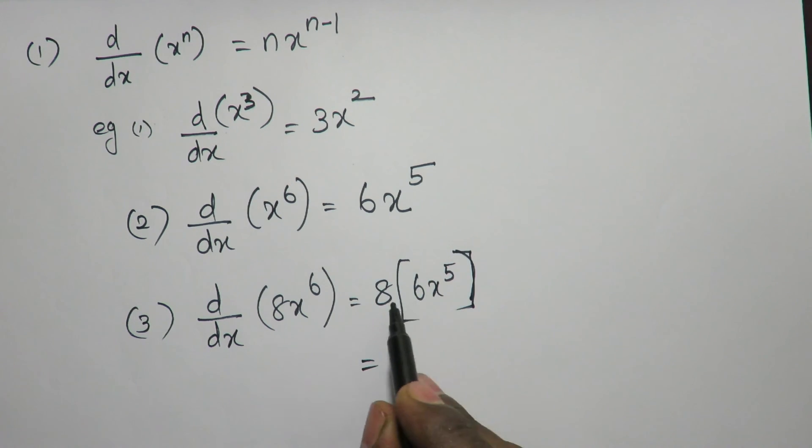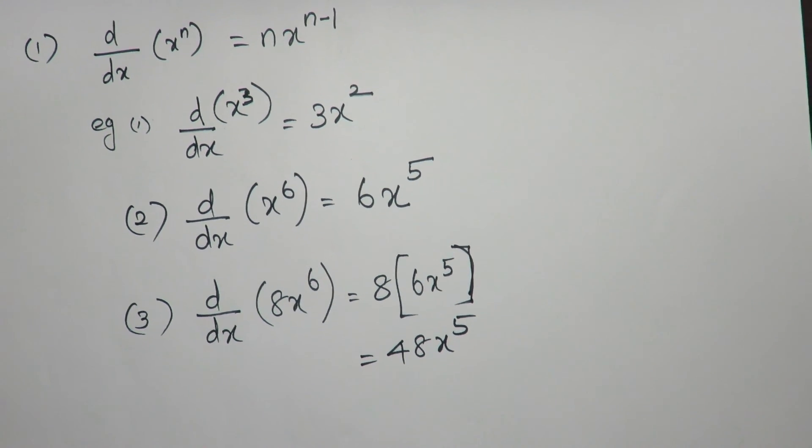Now, you can multiply and simplify. 8, 6x are 48x power 5 is my differentiation of 8x power 6.